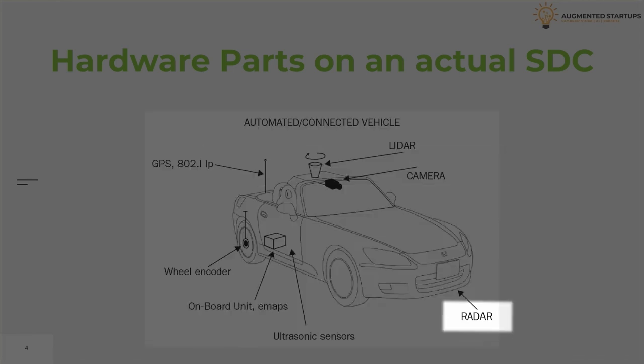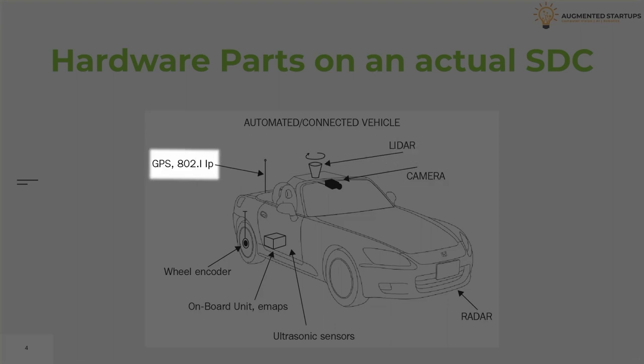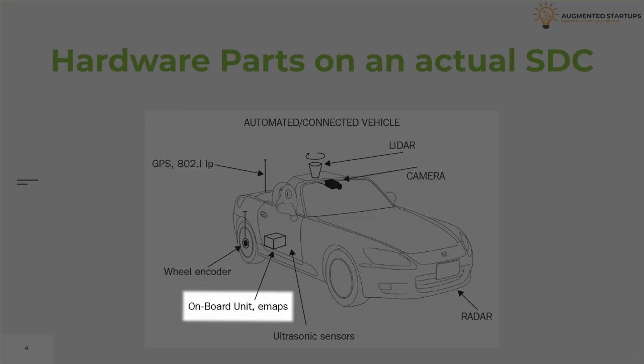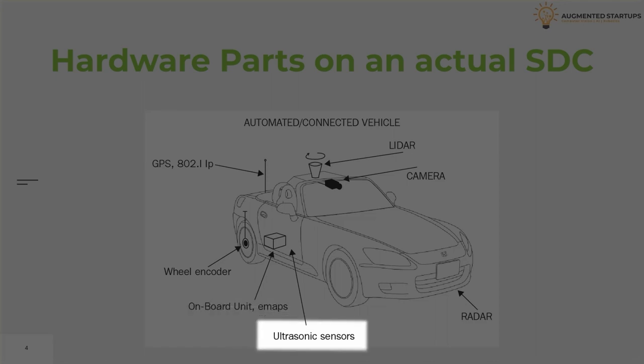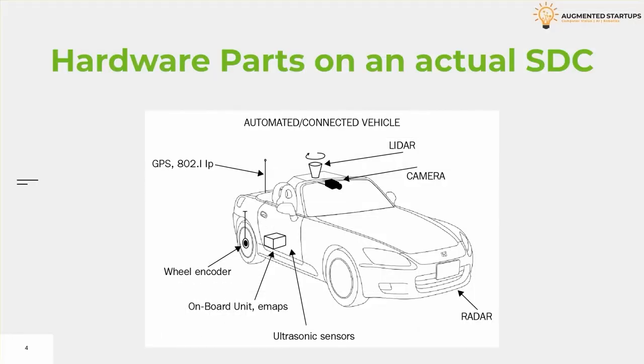These components are the radar, camera, LiDAR, the GPS tracking device, wheel encoder, onboard units, e-maps, ultrasonic sensors, etc. This figure accurately represents the positioning of these different sensors as well.